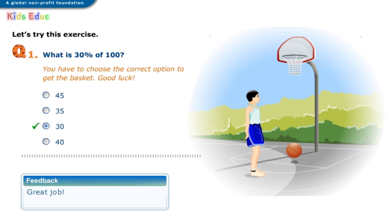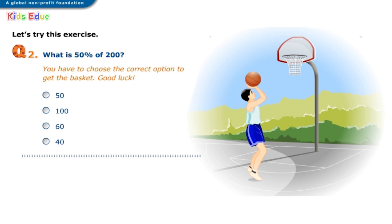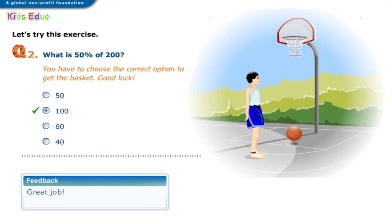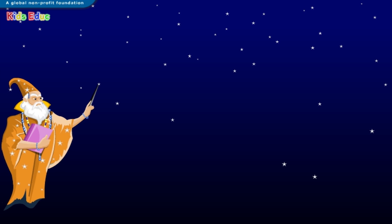Great job. Let's try this exercise. You have to choose the correct option to get the basket. Good luck. What is fifty percent of two hundred? Options: fifty, one hundred, sixty, forty. The correct answer is one hundred. Great job.